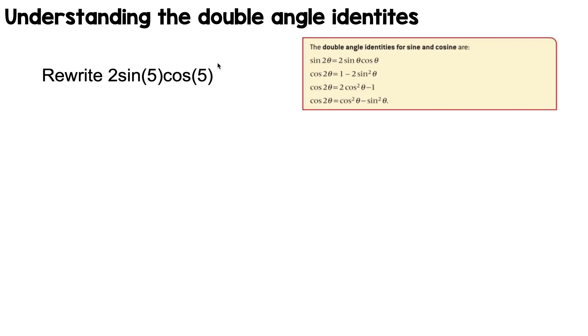So if I have 2sin(5)cos(5) and I just want to rewrite it in a different way, I could use the first identity for sine. You can see that sin(2θ) is 2sin(θ)cos(θ). What this exercise will help you understand is how this 5 behaves here.